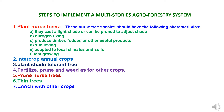Step two: intercrop annual crops. Choose an intercrop each planting season that is adapted to current sun or shade conditions. Step three: plant shade-tolerant trees. After one year, or when the nursed trees provide enough shade, plant shade-tolerant trees 3 to 4 meters apart, or at the recommended spacing for the tree crops, and plant them 1 to 2 meters away from the nursed trees.